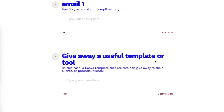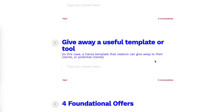Step two for realtors: give away a useful template or tool. In this case, we're giving away a Canva template that realtors can use to give to their clients or potential clients. You're sending an email referencing the realtor in very specific terms, and then giving them something free that has high perceived value — something customized for them that they can give to their clients.